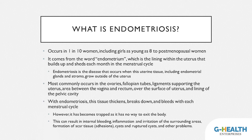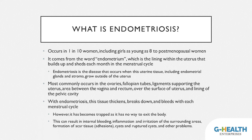Endometriosis is very common. It occurs in 1 in 10 women, including girls as young as 8 years old onto postmenopausal women. It comes from the word endometrium, which is the lining within the uterus that builds up and sheds each month in the menstrual cycle. Endometriosis is the disease that occurs when this uterine tissue, including the endometrial glands and stroma, grows outside of the uterus. The most common areas where it will grow abnormally are the ovaries, fallopian tubes, the ligaments supporting the uterus, the area between the vagina and rectum, over the surface of the uterus, and the lining of the pelvic cavity.